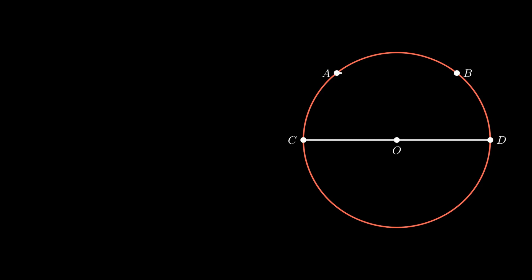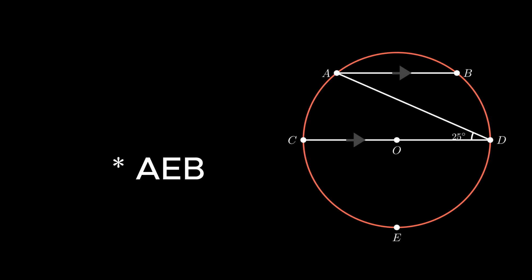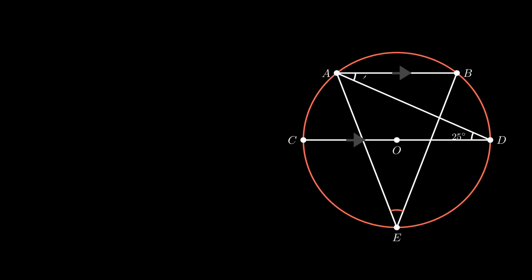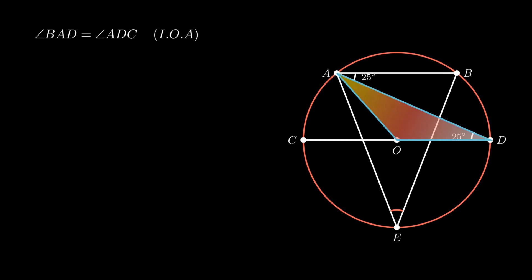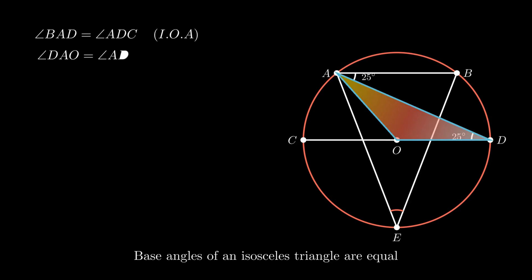Moving on to the next problem. Consider a circle with center O and let CD be the diameter. Chord AB is parallel to the diameter CD such that angle ADC equals 25 degrees. We need to find the measure of angle ACB. As interior alternate angles are equal when lines are parallel, therefore angle BAD equals angle ADC, that is 25 degrees. Join point A to center O, forming an isosceles triangle AOD. As base angles are equal, angle DAO equals angle ADO, thus angle DAO equals 25 degrees.